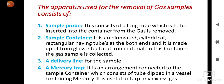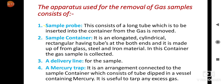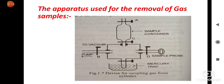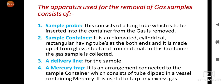Now we will see the apparatus used for the removal of gas samples. It consists of the sample probe, which has a D valve or stopcock. The sample probe consists of a long rubber tube which is to be inserted into the container from which the gas is removed — that is, the rubber tube will be inserted into another sample container from which we can draw the sample.